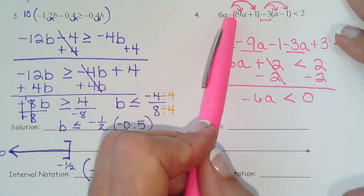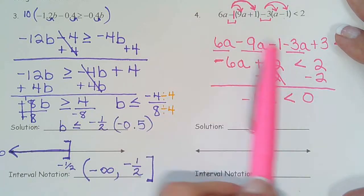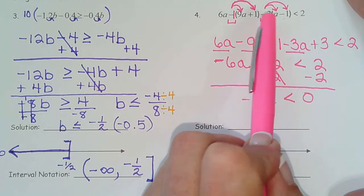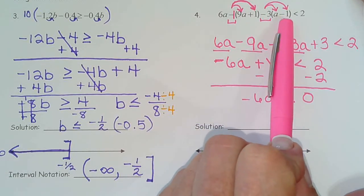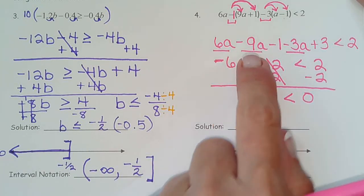6a comes down, negative one times 9a, negative 9a, negative one times one, negative one, negative three times a, negative 3a, negative three times negative one, positive three, less than two. Then I combine like terms.